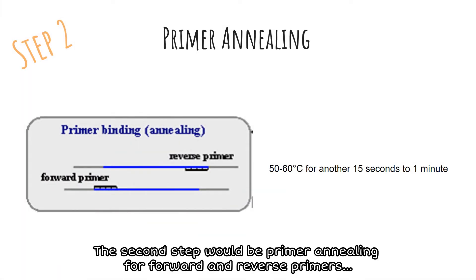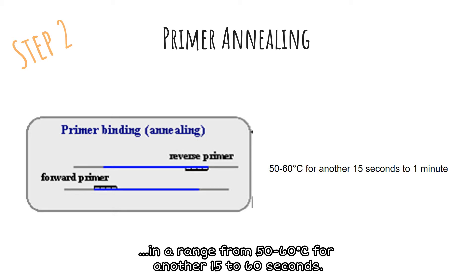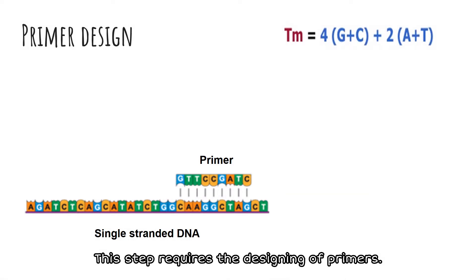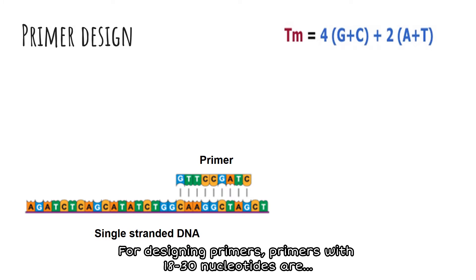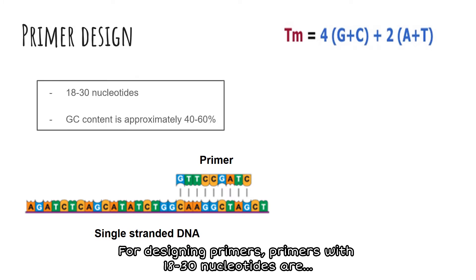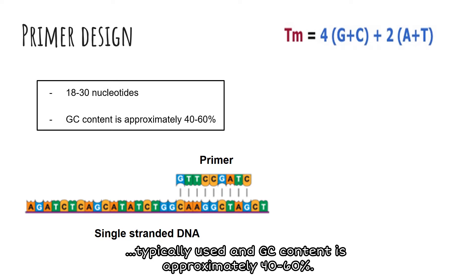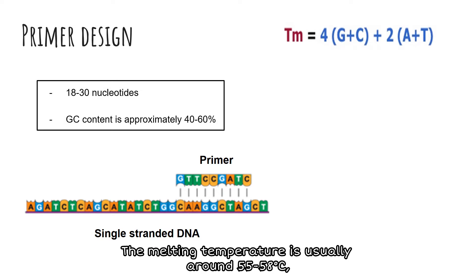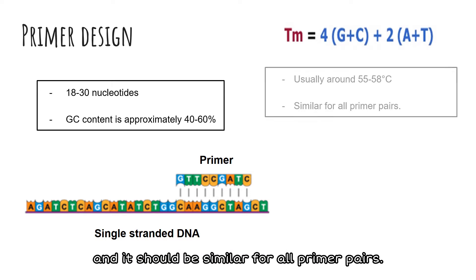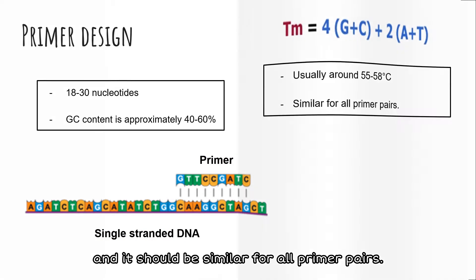The second step is primer annealing for forward and reverse primers in a range from 50 to 60°C for another 15 to 60 seconds. This step requires the designing of primers. Primers with 18 to 30 nucleotides are typically used, and GC content is approximately 40 to 60 percent. The melting temperature is usually around 55 to 58°C and should be similar for all primer pairs.